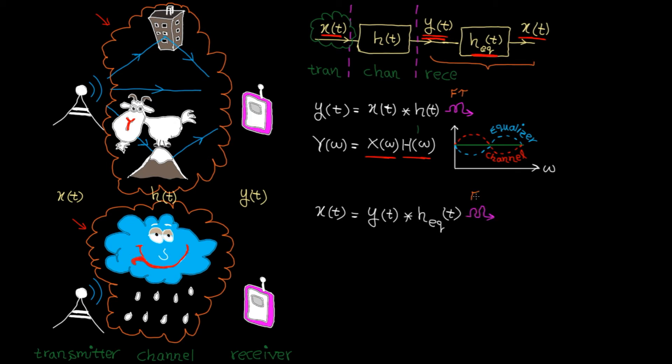Let's travel to the frequency domain. So convolution is replaced by multiplication. As we showed already, Y(ω) is basically X(ω) multiplied by H(ω). So let's replace it here.